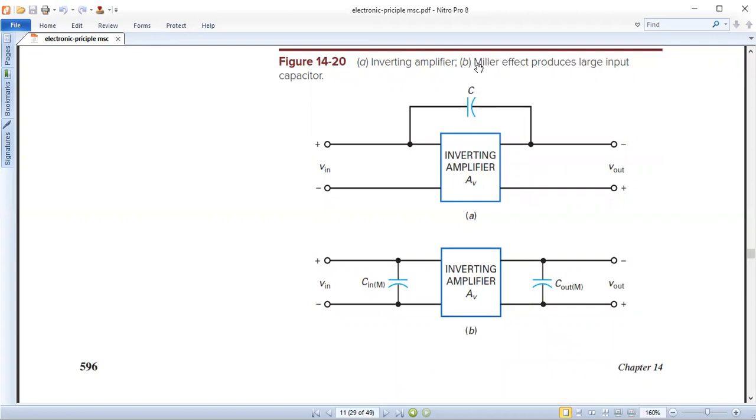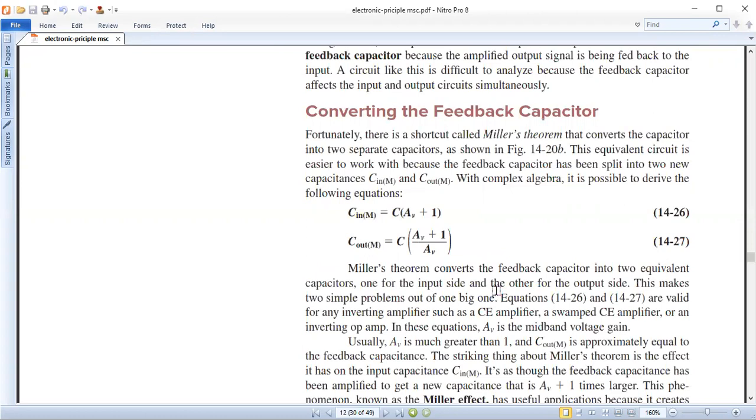This capacitor is very difficult to analyze with two components. We divide the two components. One is in the input side and the other is in the output side which are parallel. The capacitor is called Miller Capacitors and the phenomena is called Miller effect. Fortunately, there is a shortcut called Miller theorem that converts the capacitor into two separate capacitors and divides it. This equivalent circuit is easier to work with because the feedback capacitor is split into two new capacitors C_in_M and C_out_M.